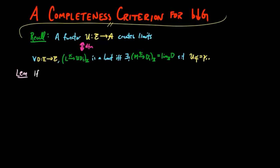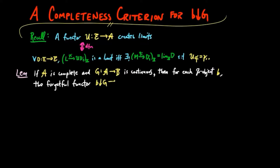We prove the following lemma. If A is complete and the functor G is continuous, then for each B object B, the forgetful functor U from B over G to A